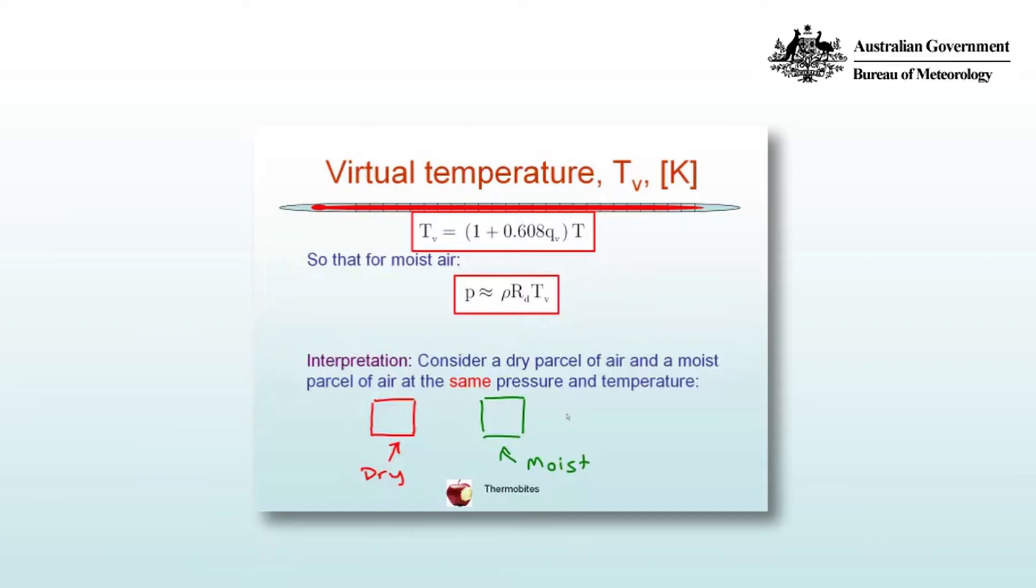So what's the implications of that? What does Tv mean? Well, consider a dry parcel of air and a moist parcel of air, and they both have the same pressure and the same temperature. We can write out the ideal gas laws for both of those and equate them.